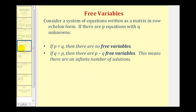Next, if we consider a system of equations written as a matrix in row echelon form, if there are p equations with q unknowns or variables — if p equals q, there are no free variables. But if q, the number of variables, is greater than p, the number of equations, then there are q minus p free variables. This also means there will be an infinite number of solutions to the system of equations.